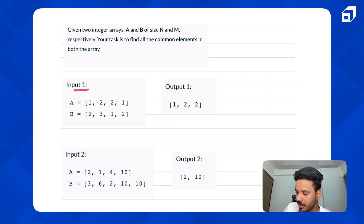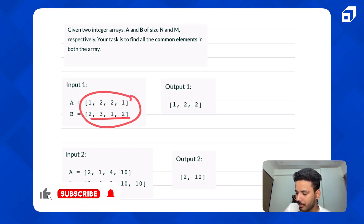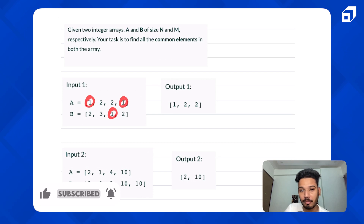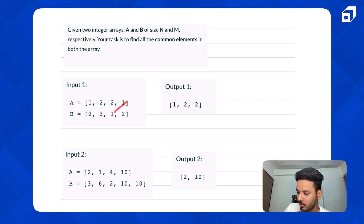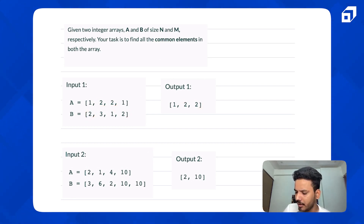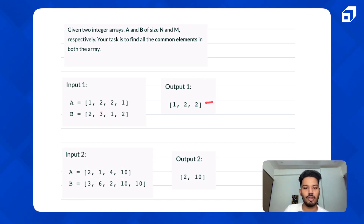The first input is array A = [1, 2, 2, 1] and B = [2, 3, 1, 2]. The common elements: one appears twice in A but only once in B, so one appears once in the output. Two appears twice in A and twice in B, so two appears twice in the output. Three appears only in B, so no common occurrence of three.